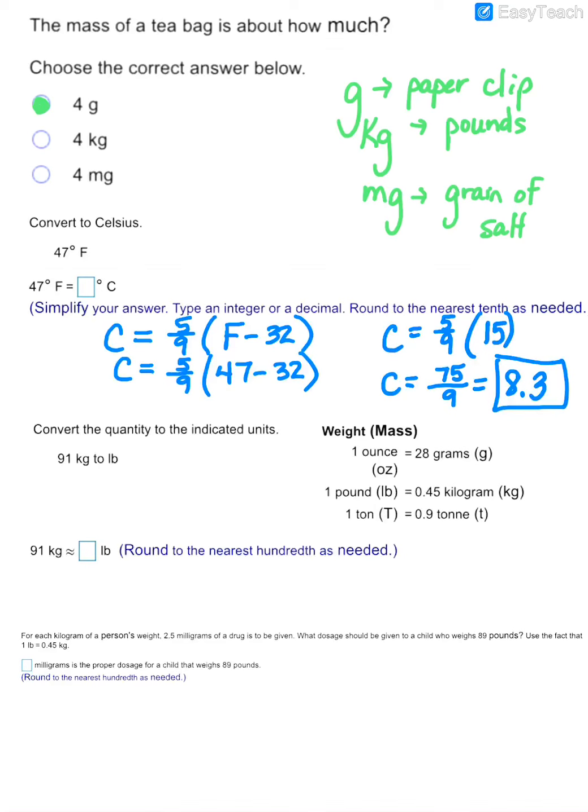On this next one, we are converting. We have 91 kilograms and we're going to convert to pounds. Now to do this, we use unit fractions. And since we're starting with kilograms, in order to make those units cancel, you're going to have to put kilograms on the bottom of a fraction compared to pounds on the top.